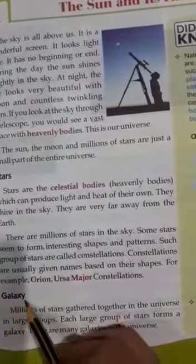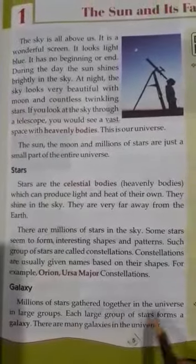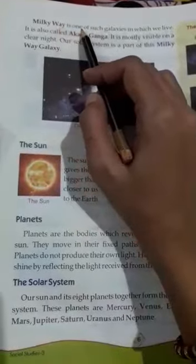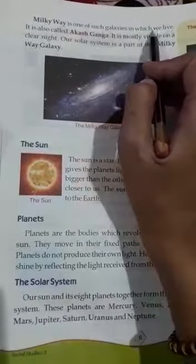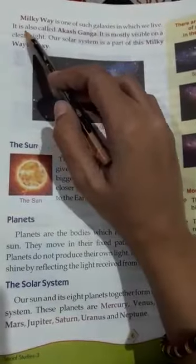Next: Galaxy. Akas Ganga. Millions of stars gather together in the universe in large groups. Brahmaand mein bahut se samoohon mein lakhon sitare ek saath ekatrit hote hain. Each large group of stars forms a galaxy. Akas Ganga ke sitaron ka pratyek bada samoh. There are many galaxies in the universe. Milky Way is one such galaxy in which we live. Dudiya rasta aisi akas gangaon mein se ek hai jisme hum rehte hain.